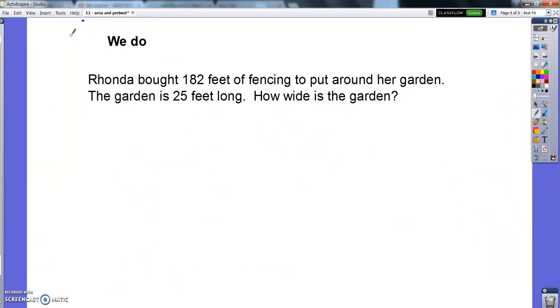And let's try this one. Rhonda bought 182 feet of fencing to put around her garden. The garden is 25 feet long. How wide is the garden? So I've got some kind of garden here. And let me think about it before I draw it. So let's think of what I've got. So I've got fencing to put around. Magic word here. The last question was about area. This word around is a clue that I'm talking about perimeter.